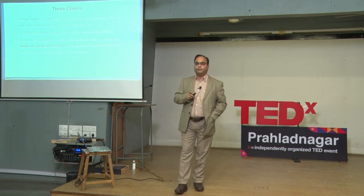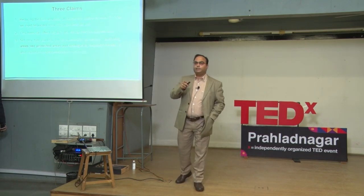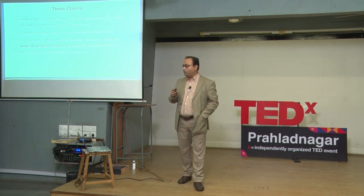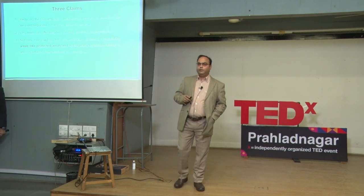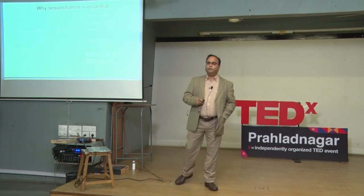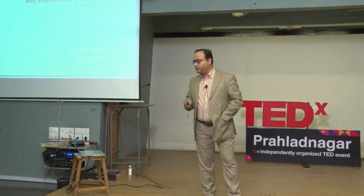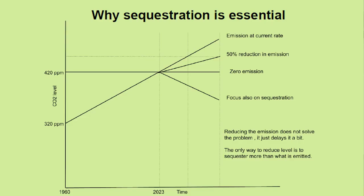That is my first claim. When it comes to sequestration, only trees can offer long-term, enhanced, effective sequestration. Third: not only tree planting, but sustainable harvesting is also important. Coming to the first claim — why is sequestration essential? There is a line going from 320 ppm touching 420 and going above; this is the CO2 level likely to continue if we do nothing. The second line shows what happens if we reduce our emissions by 50 percent.